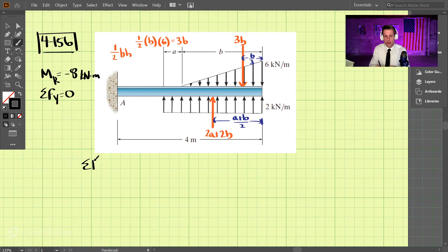We know from the problem statement that the sum of forces in the y-direction equals zero. We have 2a + 2b upwards and 3b downwards, so 2a + 2b - 3b = 0. If we simplify, we get 2a - b = 0, or 2a = b. That's one equation.